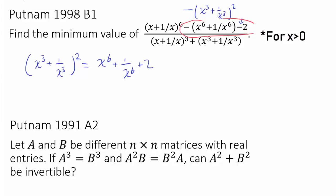So this entire thing is the same thing as this thing. So we know this entire thing can be simplified as x plus 1 over x to the 6 minus x cubed plus 1 over x cubed squared divided by this thing.